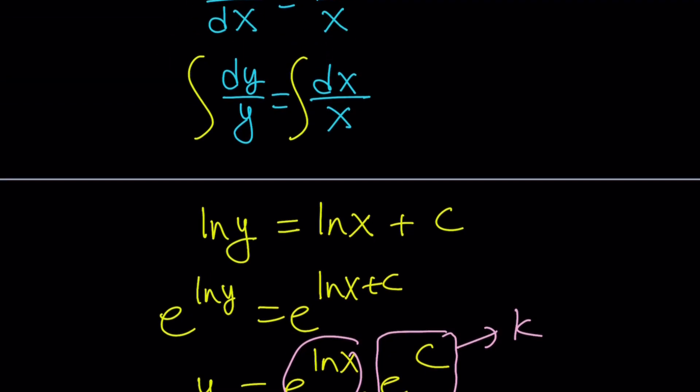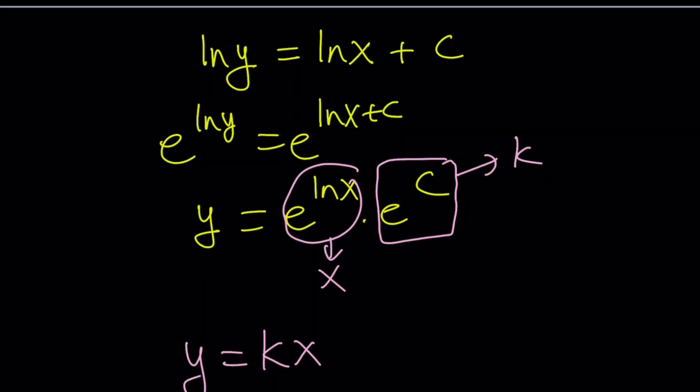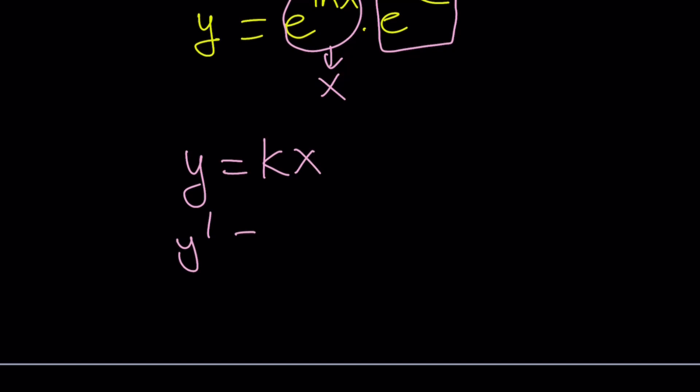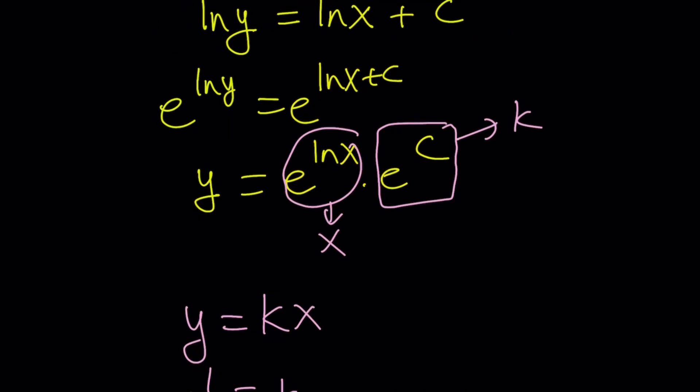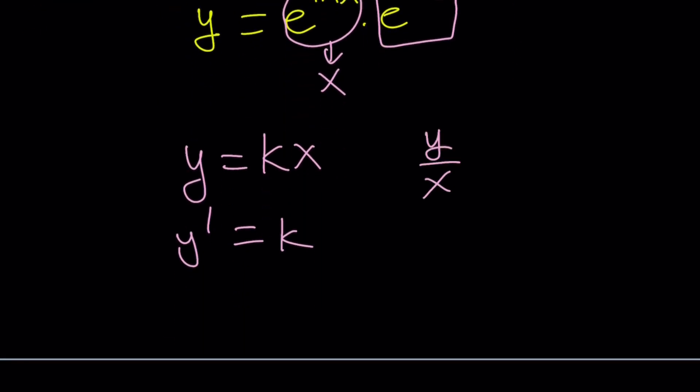Wow. It's that simple? Yes. And you can definitely check this out. Like, differentiate y. You get k. And then divide y by x. y by x. y is kx. So, you get k. And that is equal to y prime. So, the equality is satisfied. Nice. Okay. Let's see if we can get the same result with another solution.